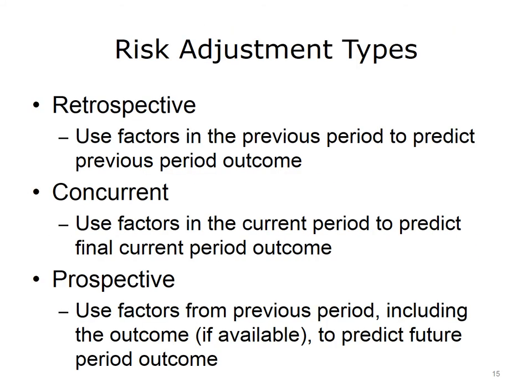There are three main types of risk adjustment. Retrospective risk adjustment uses factors in the previous period to predict previous period outcomes. Concurrent risk adjustment uses factors up through and into the current period to predict the final level of the current period; it can include the current level of the outcome of interest, though it is not yet completed. Prospective risk adjustment uses factors from the previous period, including the outcome if available, to predict future period outcomes. It's worth noting that some factors may not predict the future very well, despite being good retrospective factors, if the factor is unlikely to persistently affect the outcome — for instance, a broken leg.